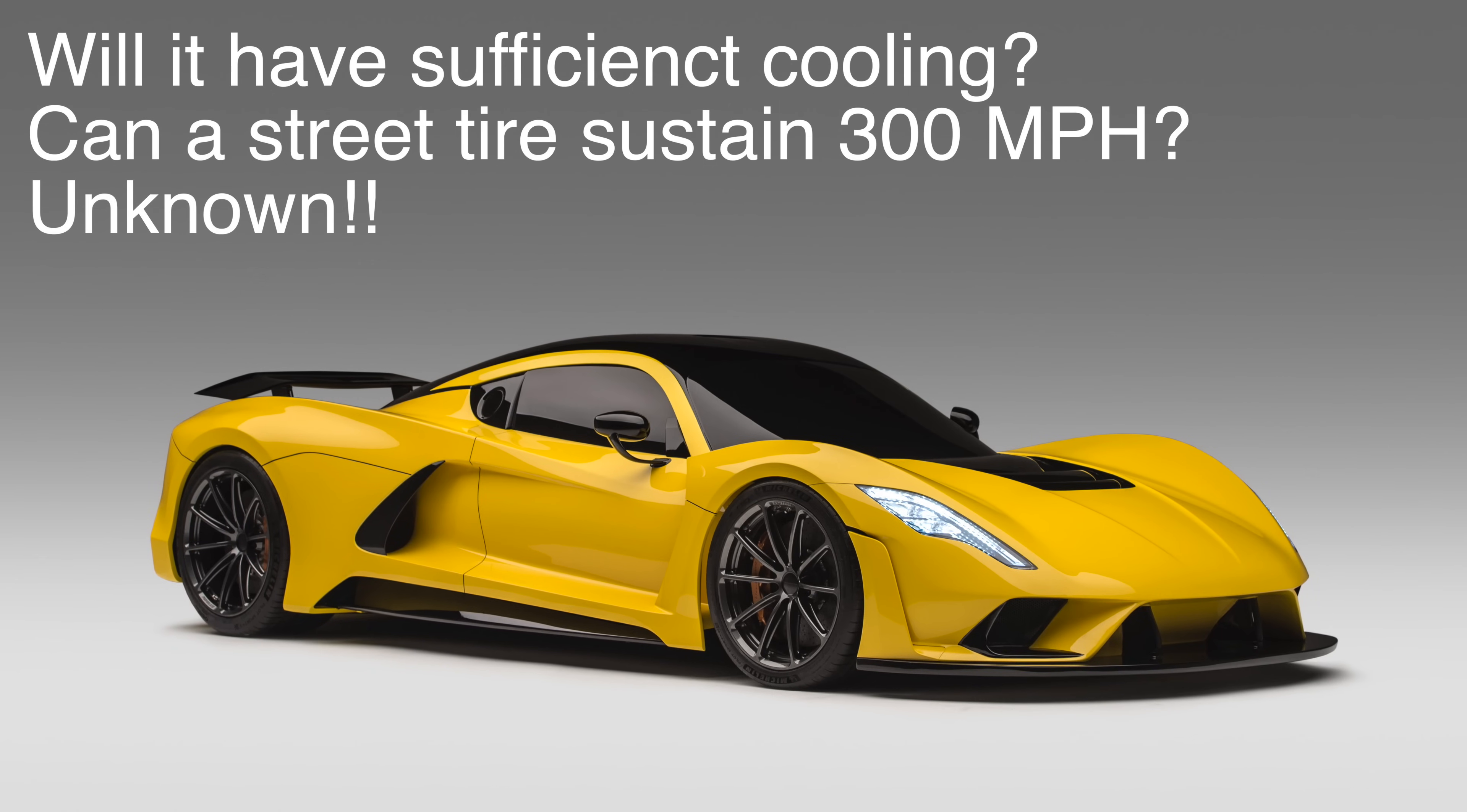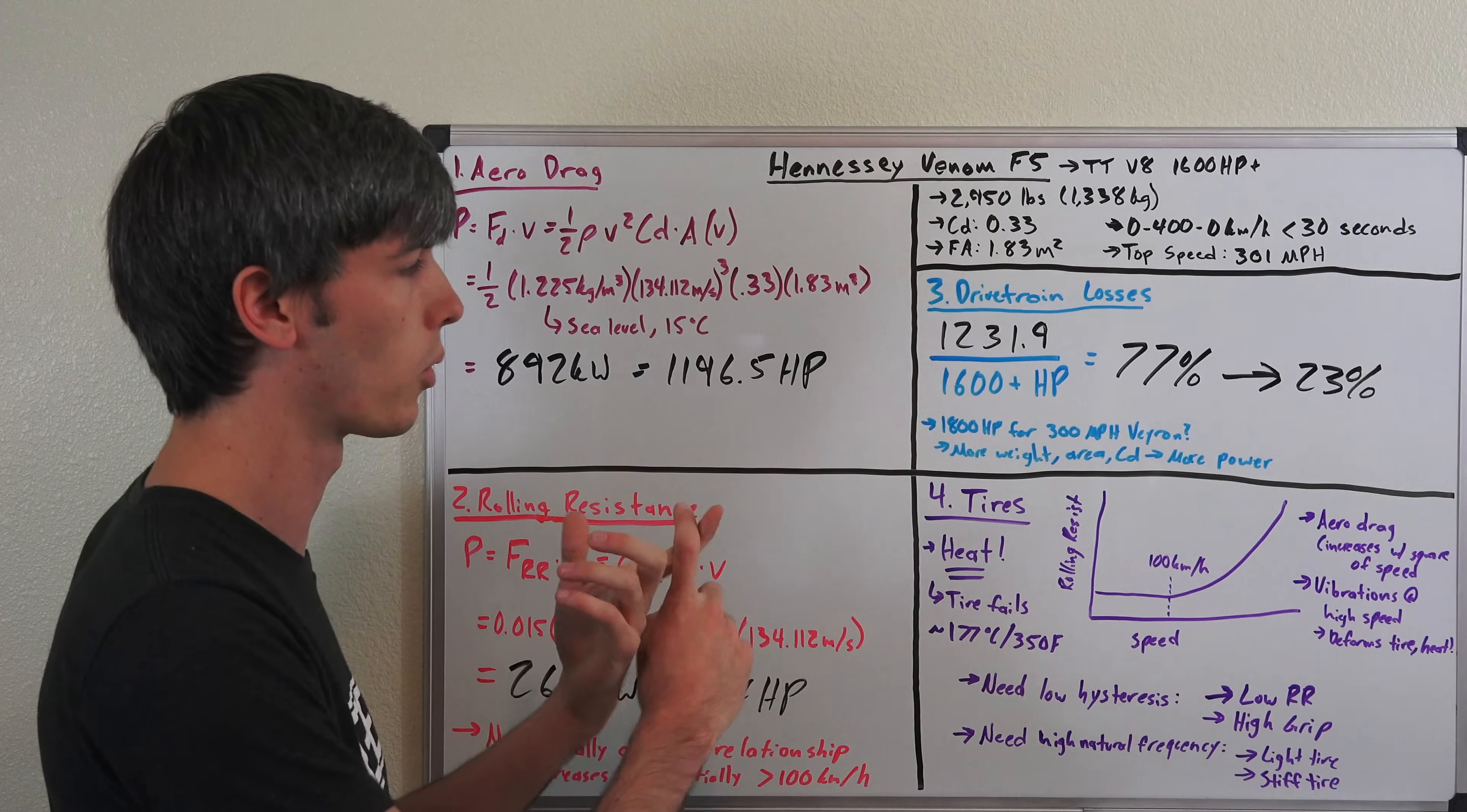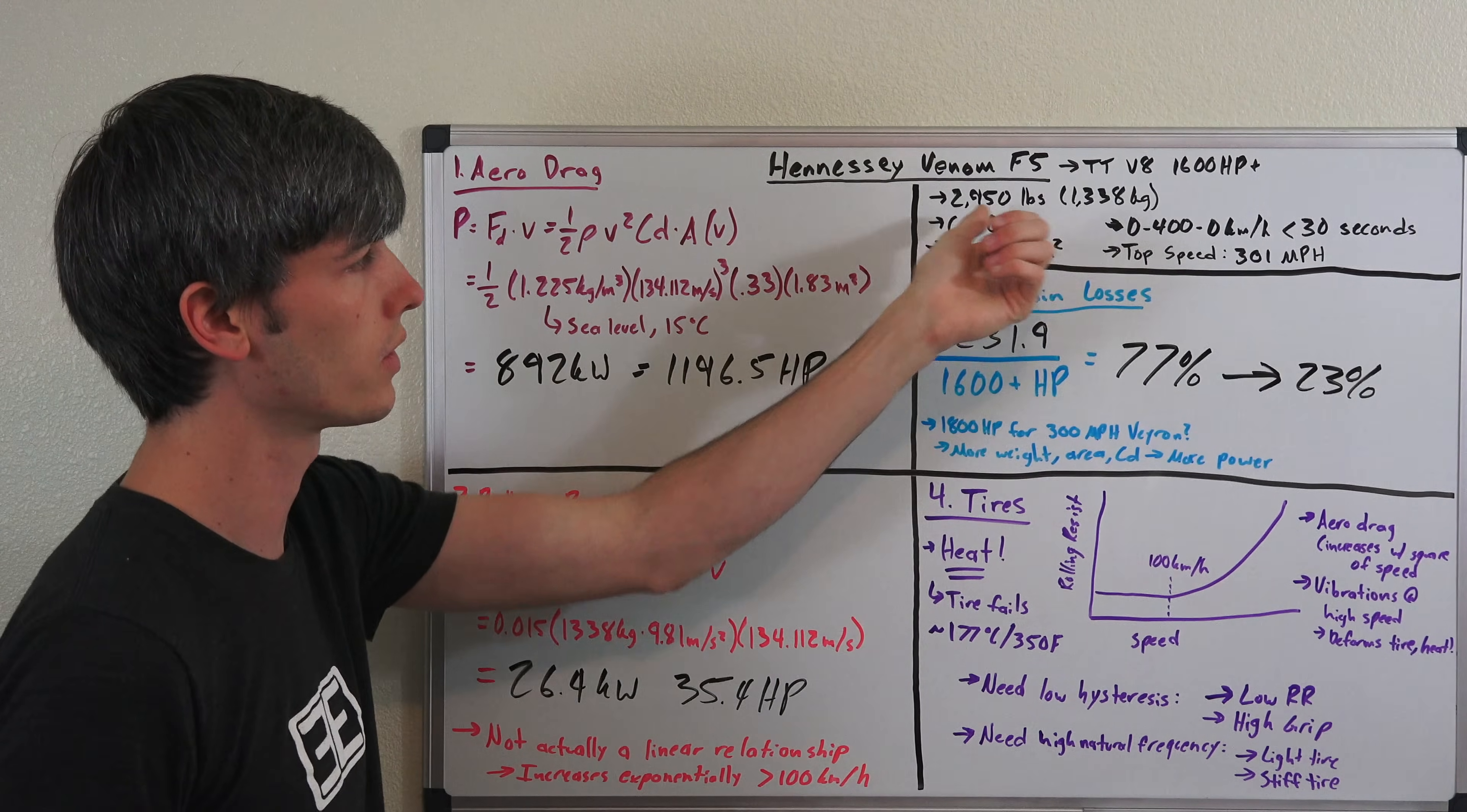In a previous video I said can a car hit 300 miles per hour, how much power will it need? Well, I used the Bugatti Veyron as the example and that turned out to be about 1,800 horsepower. That car has more weight, more frontal area, and a higher drag coefficient. That's why that higher horsepower number is required rather than something like 1,600 when you can get that drag coefficient down and the frontal area down.